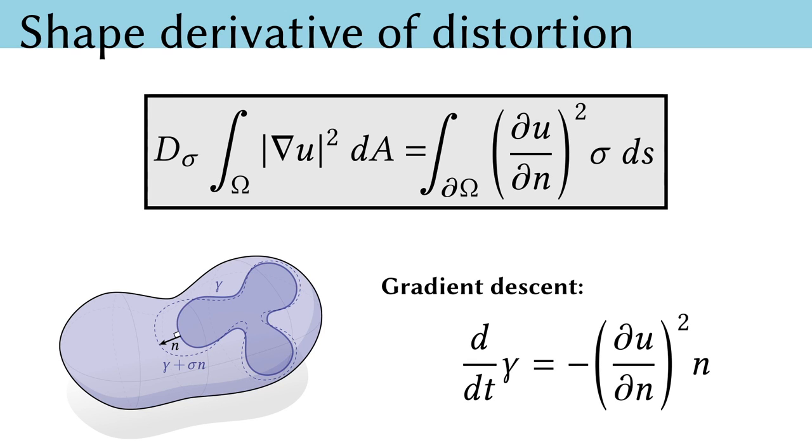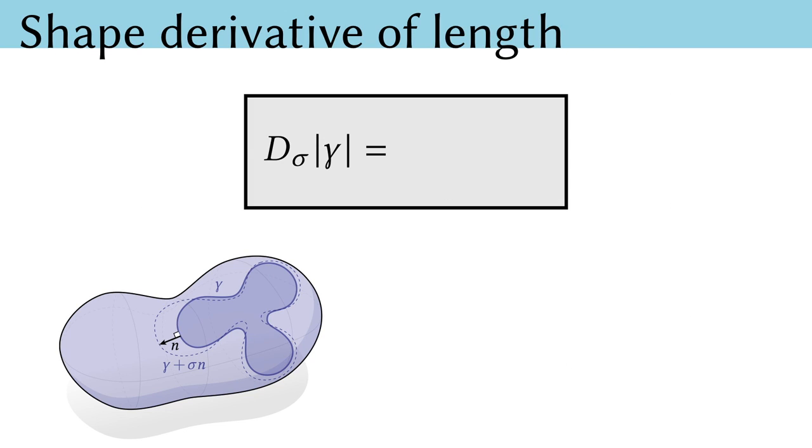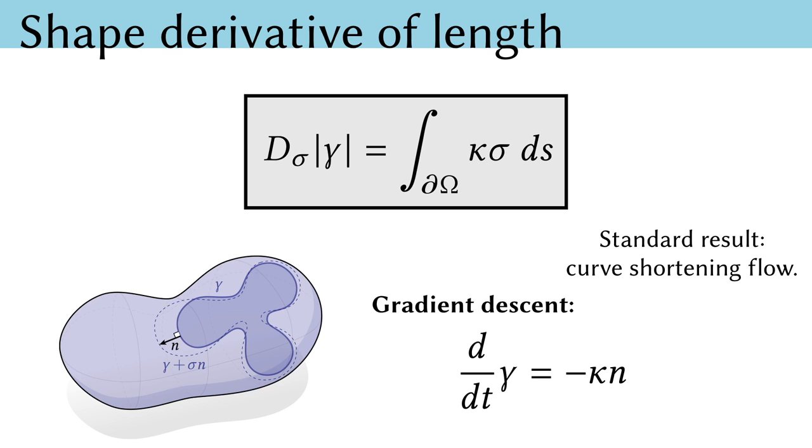Now, as usual, once we can evaluate the change in a quantity with respect to a perturbation, we can minimize that quantity via a gradient descent in the direction of maximal change. This is our distortion cut flow. Similarly, we can take a shape derivative of our other energy term, the length of the cut curve. This yields an integral of kappa sigma over the boundary, where kappa is the geodesic curvature of the cut. Once again, now we can minimize the length by flowing the cut in the direction of steepest descent. Note that this is just a well-known curve shortening flow.